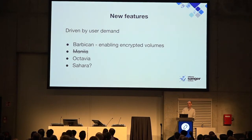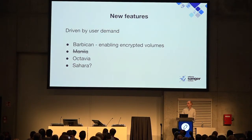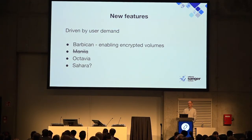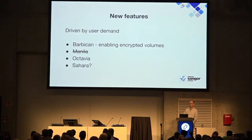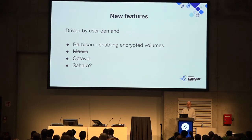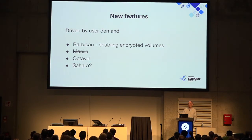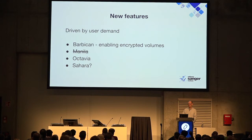We're going to add new features only driven by user demand — we're trying not to turn on the shinies just because they're shiny. Barbican has been asked for a long time; what it enables is encrypted volumes, so data encryption at rest — which some data access agreements require. We'd like to offer Manila but our Ceph is not yet Luminous in time for this upgrade, so that will get pushed back. Octavia we're looking forward to for load-balancer-as-a-service edge cases. Sahara — people talk about Hadoop, but I'm not sure it'll see enough widespread take-up.